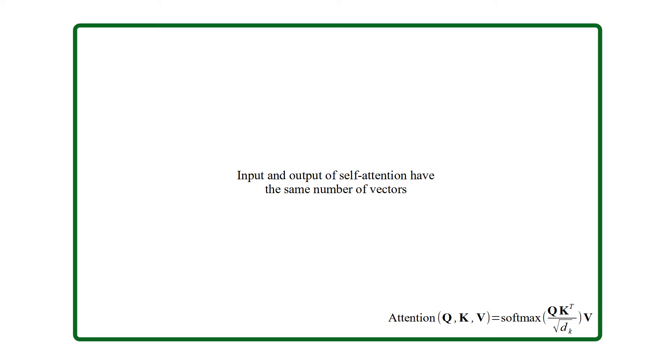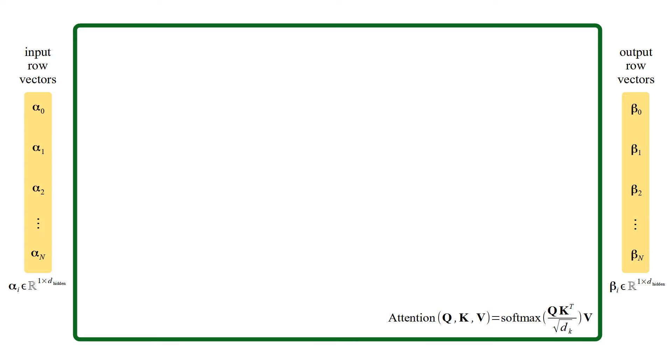Input and output of self-attention have the same number of vectors. For each input vector alpha i, a query, a key and a value vector are computed.